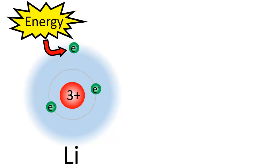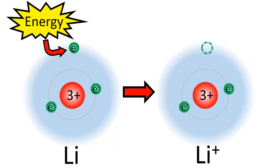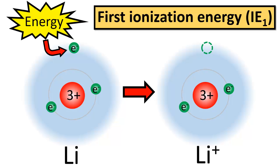So the definition of ionization energy: the ionization energy of an atom is the amount of energy required to remove an electron from that atom in the gaseous state. For instance, suppose we successfully supplied enough energy to a lithium atom to remove its outermost electron. The resulting cation would have a charge of 1+, and this amount of energy would represent lithium's first ionization energy, which is the amount of energy required to remove an electron from a lithium atom for the first time.